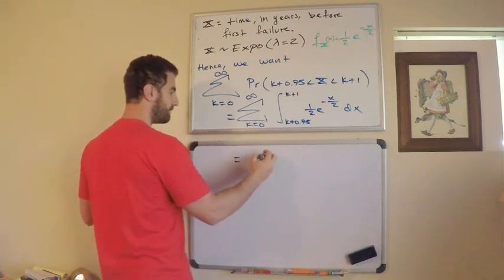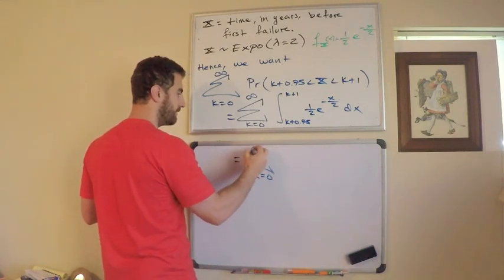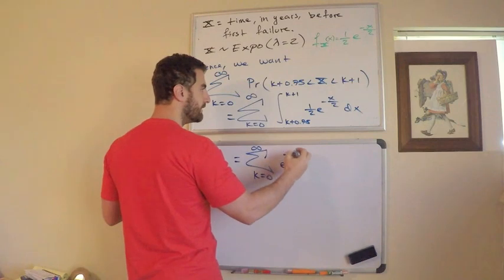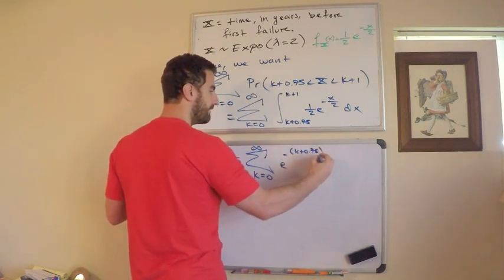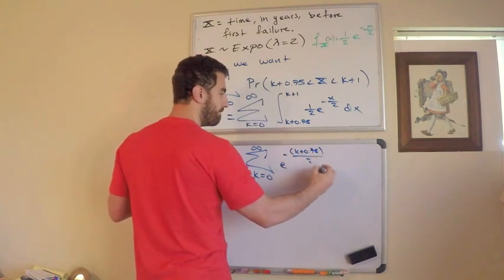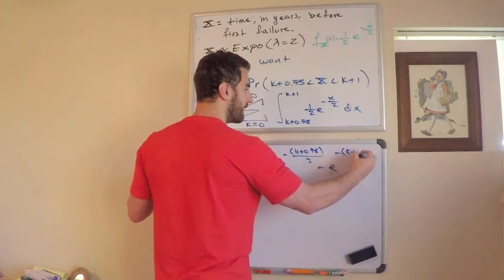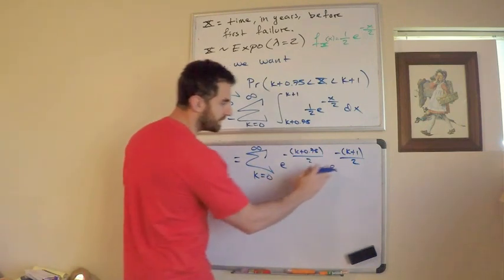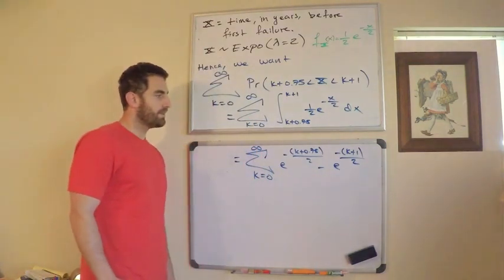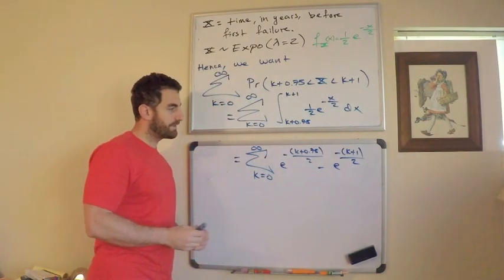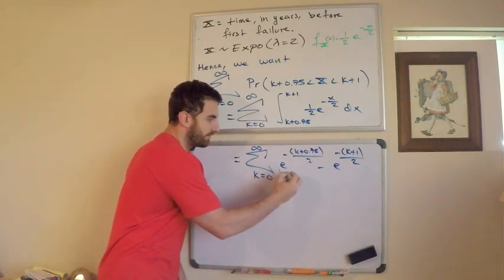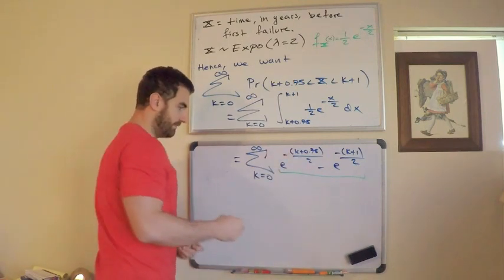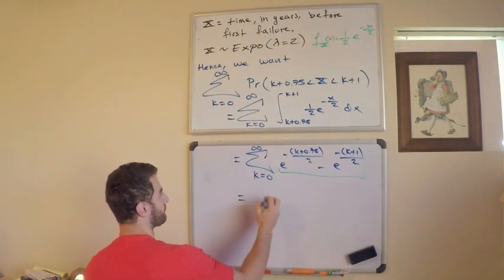So, this is equal to, the sum, k equals 0 to infinity. This integral here is going to be e to the negative k plus 0.75 over 2 minus e to the negative k plus 1 over 2. So, just do a u substitution. That's what you should get. All right. There's something we can factor out. There's something we can factor out. If you look here, we need to find the GCF and convince yourself of this here. What I'm going to do is I'm going to factor out, they both have e to the negative k over 2.